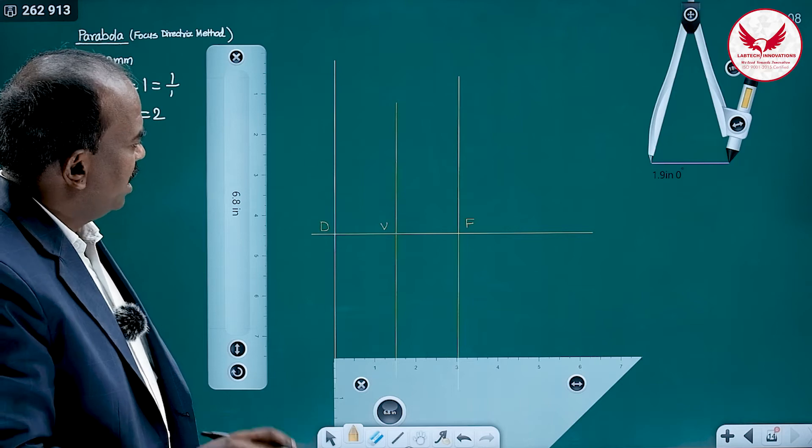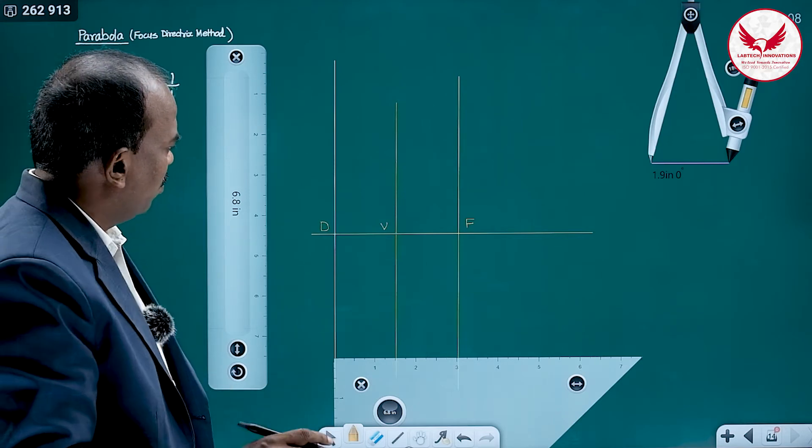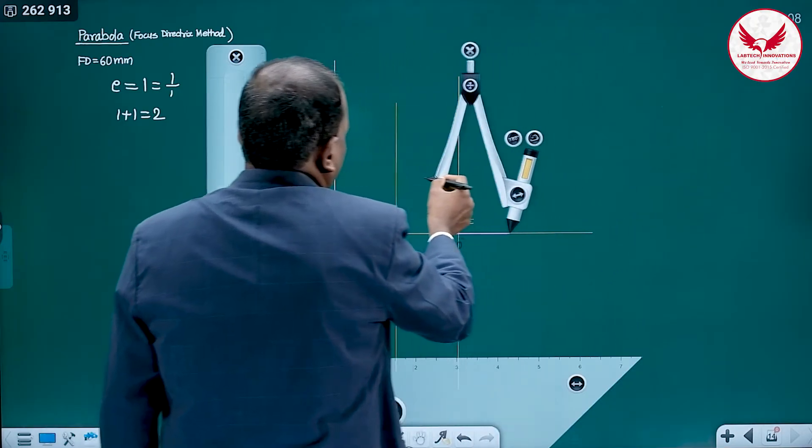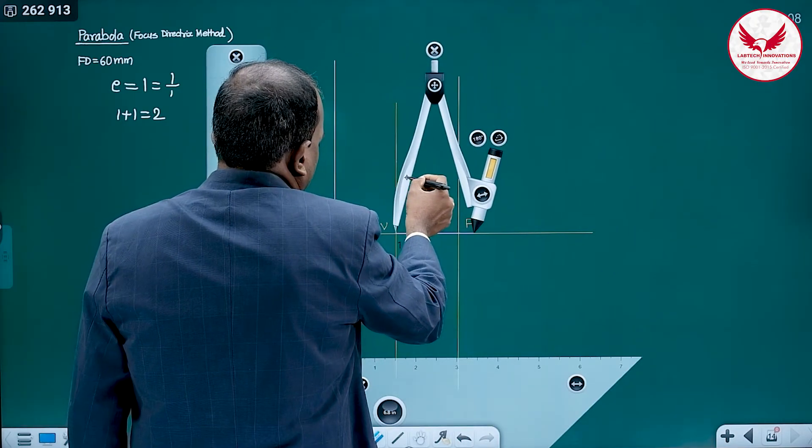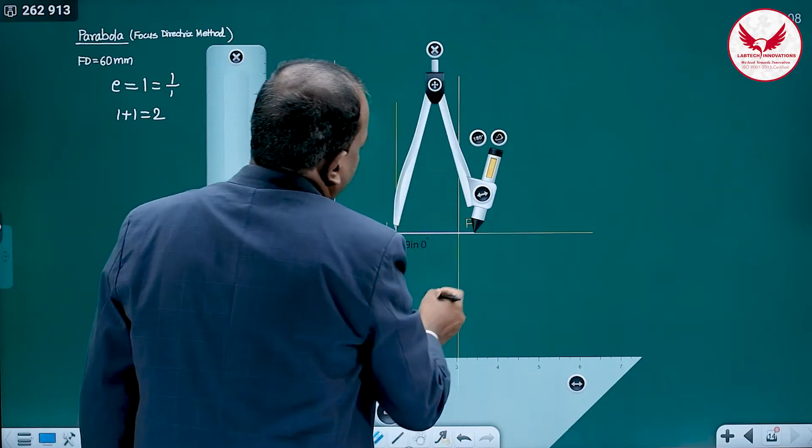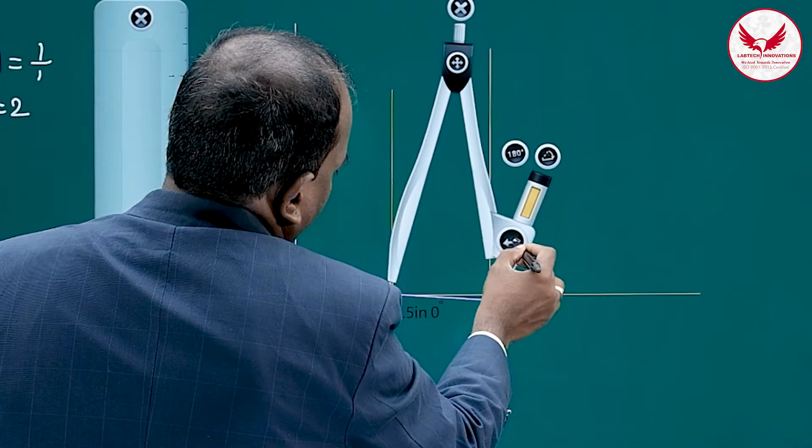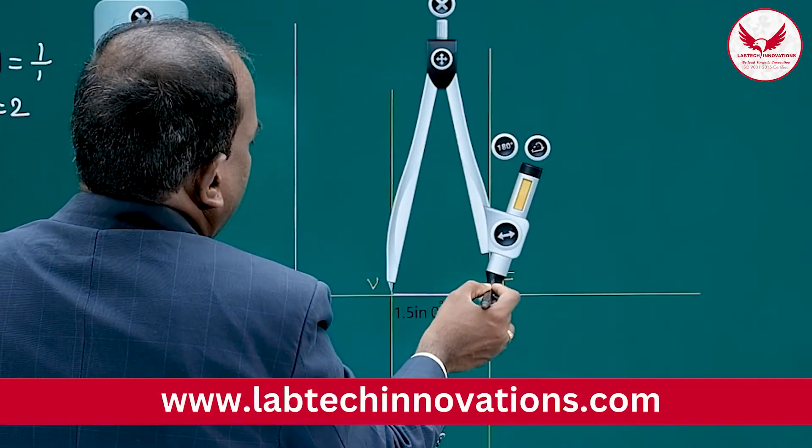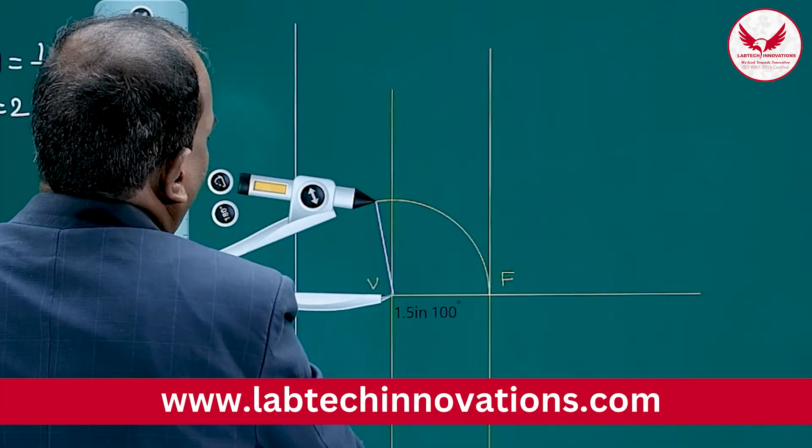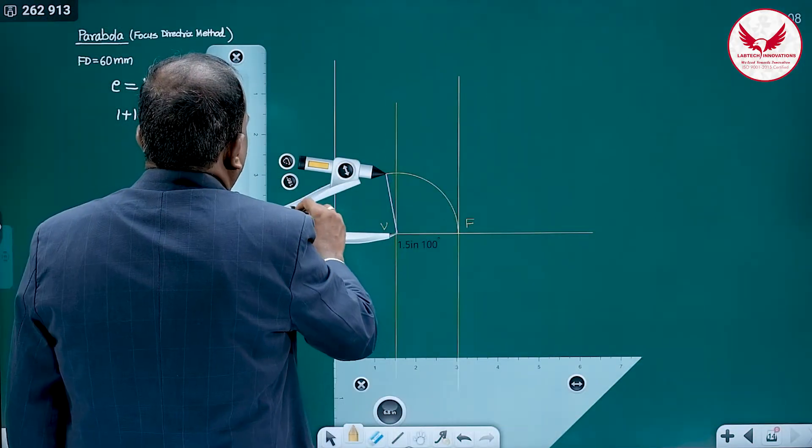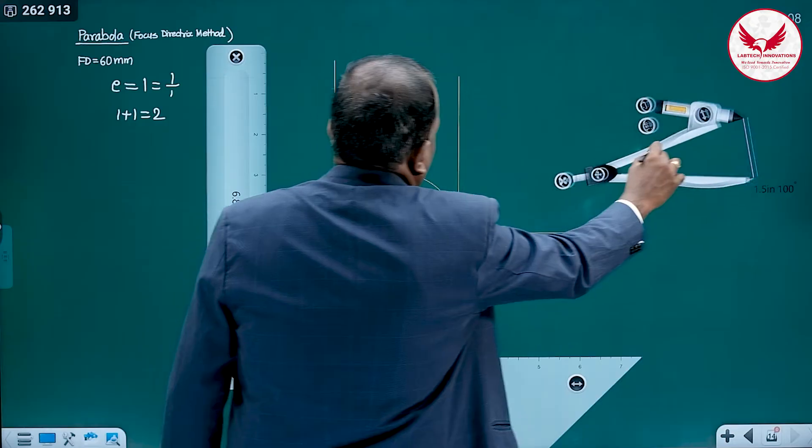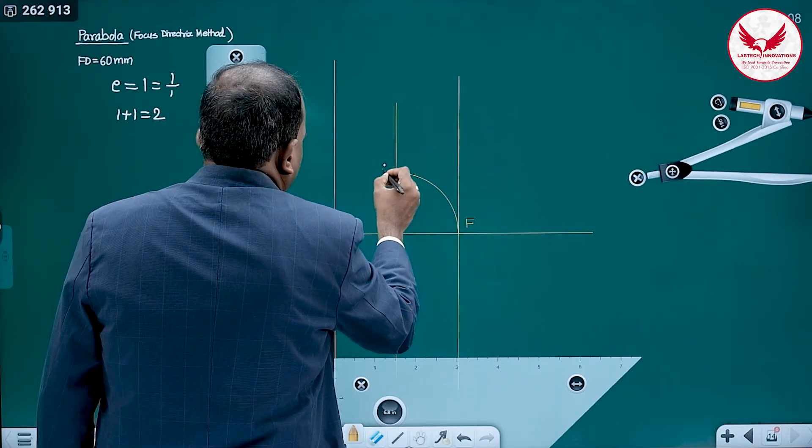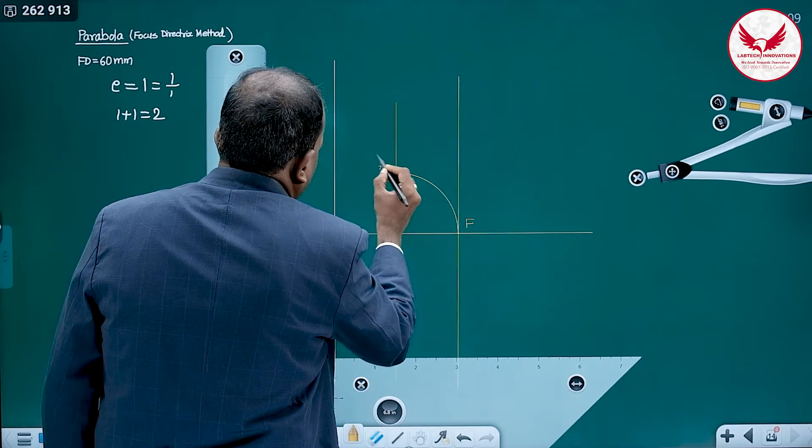Very first thing you have to do is keep the compass at vertex, then take VF distance. Take VF distance and with this distance, cut the arc on this vertical line. Wherever it intersects, give some name, any name, A.